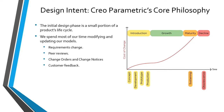For example, as you're designing, your product requirements might change. You might have peer reviews where you identify different things that need to be fixed. You could have change orders and change notices that affect your product as a result of prototype, testing, and manufacturing. And once the product is released, you might get feedback from your customers or from the field that tells you that you need to make some different changes.